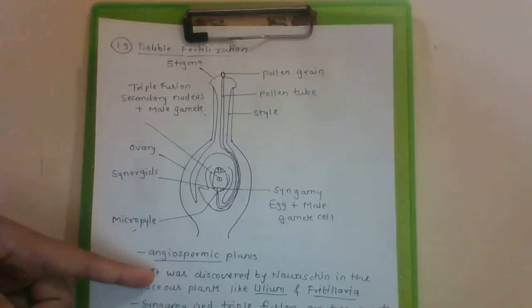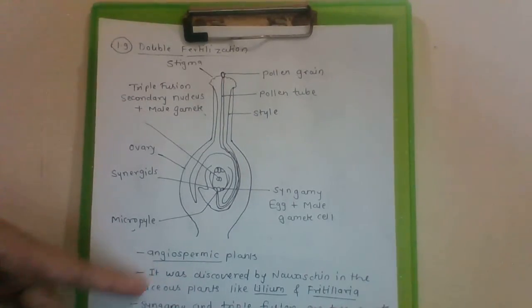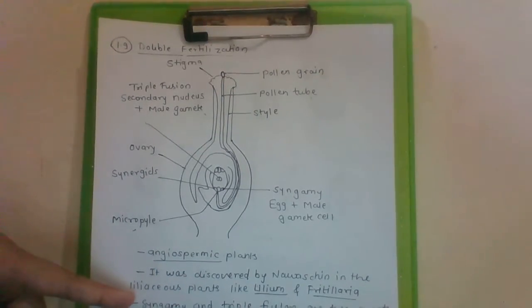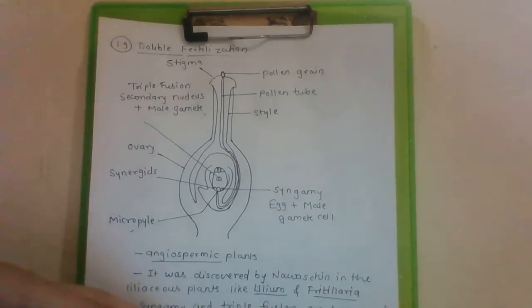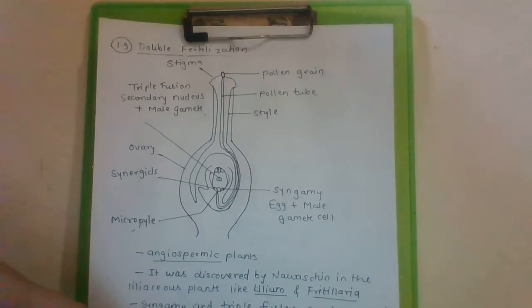It was discovered by Nawaschin in the liliaceous plants like Lilium and Fritillaria.